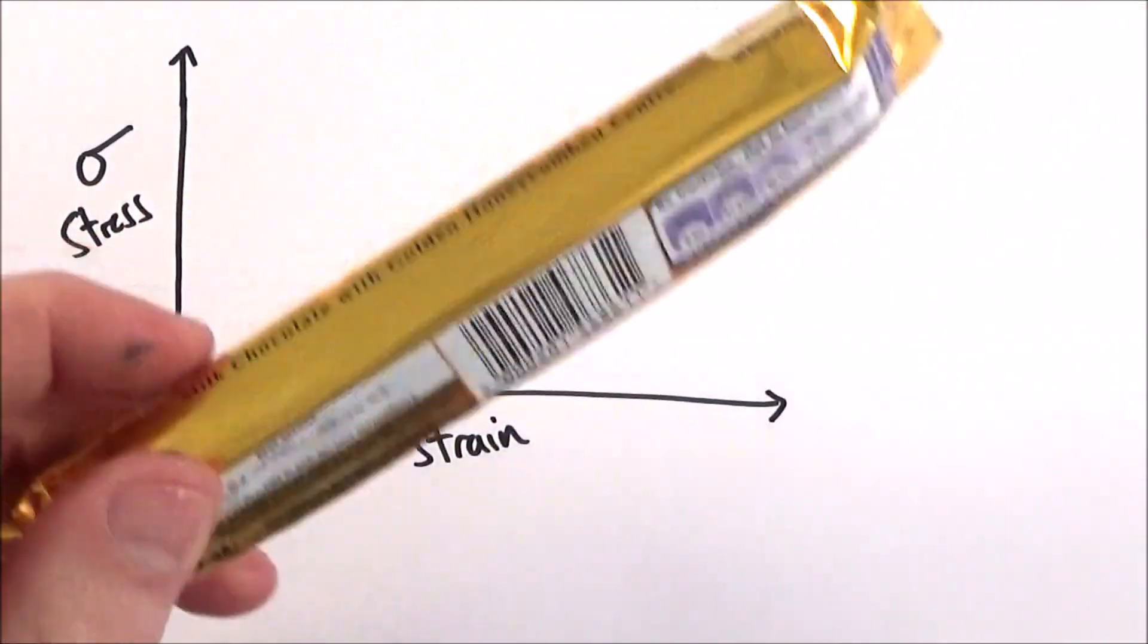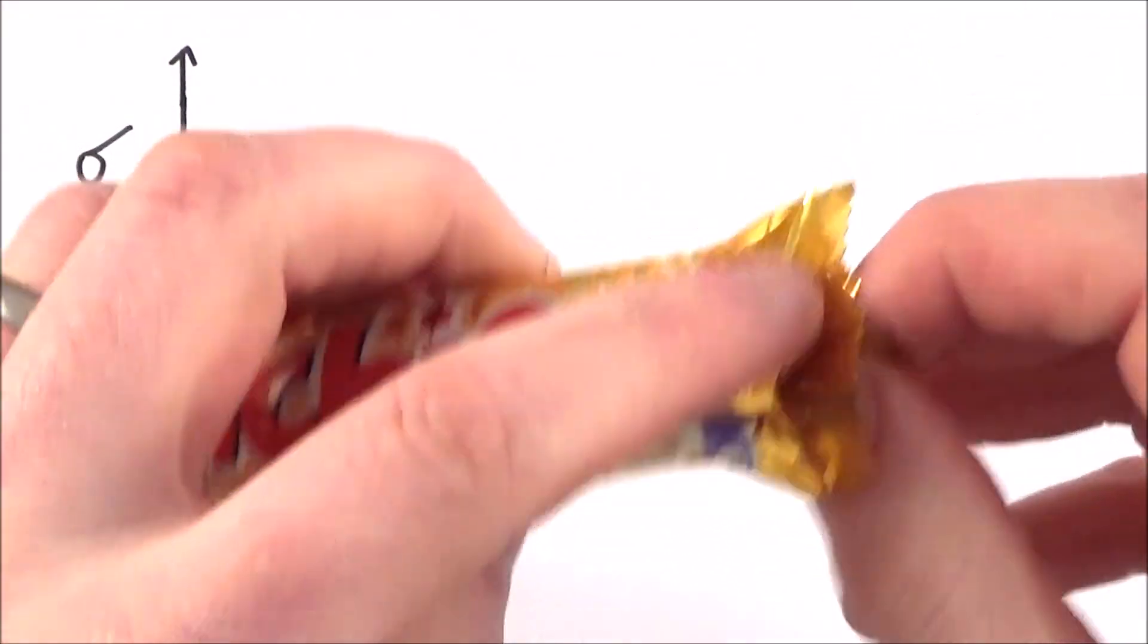Now we can look at different stress-strain graphs for different materials. So first of all, let's look at a Crunchy.